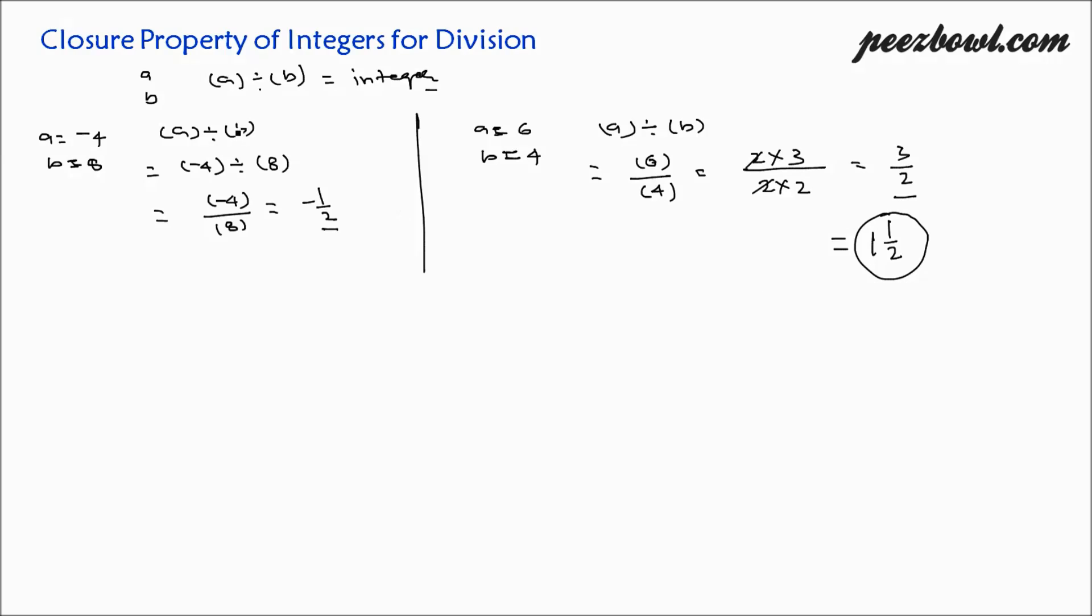So we come to know that closure property of integers for division is not true. And we have proved it by giving two examples: negative 4 and 8, and 6 and 4.